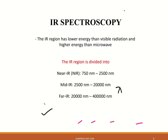There are three regions of IR. The first one is near IR, which is 750 nanometers to 2500 nanometers. Mid IR is from 2500 to 20,000 nanometers. Far IR is 20,000 to 400,000 nanometers.